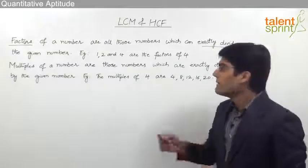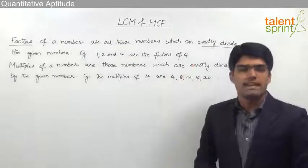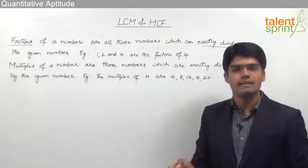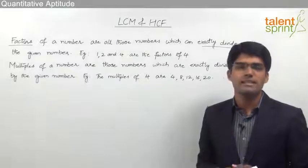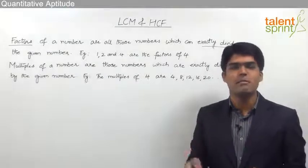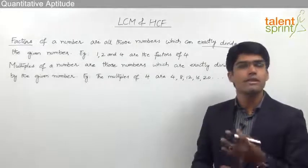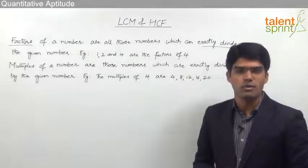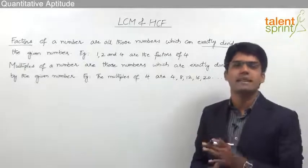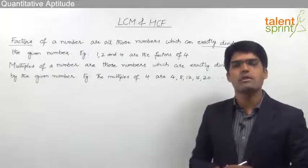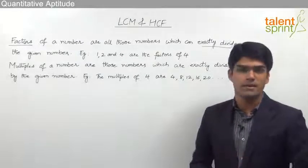For example, if you take the number 3, it does not divide 4 exactly. 4 divided by 3 equals 1.33, so there is a decimal part — the answer is not an integer. So 3 cannot be considered as a factor of 4. Only 1, 2 and 4 are the factors of 4 because they can exactly divide it.